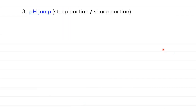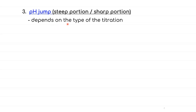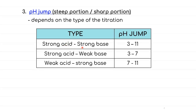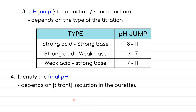The third step involves the pH jump, which can be seen from the steep portion of the titration curve. It depends on the type of titration: strong acid and strong base has a pH jump of 3 to 11; strong acid and weak base has a pH jump of 3 to 7; and weak acid and strong base has a pH jump of 7 to 11. The fourth and final step is to identify the final pH, which depends on the concentration of the titrant.